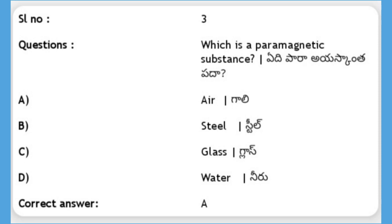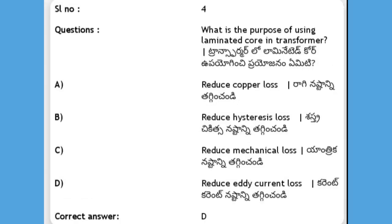Next, which is a paramagnetic substance? The answer is A, air. Air is a paramagnetic substance. Options: air, steel, glass, water.